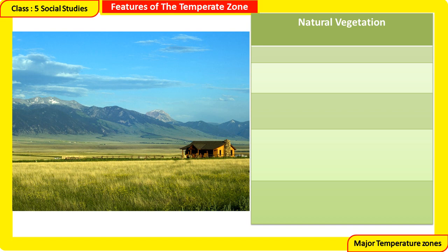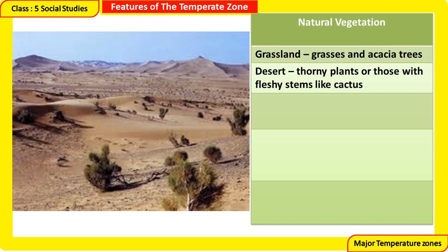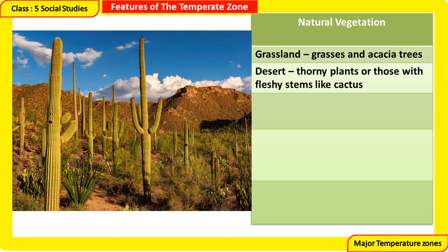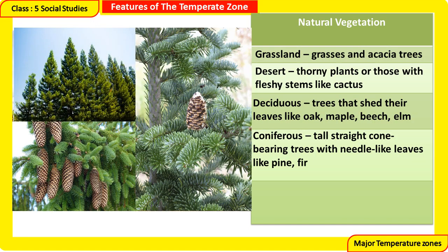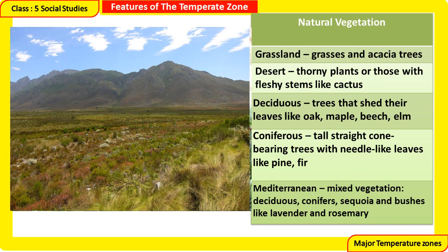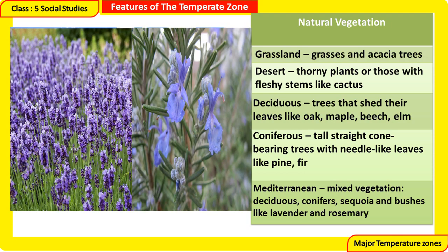Natural Vegetation of the Temperate Zone: Grassland — grasses and acacia trees. Desert — thorny plants or those with fleshy stems like cactus. Deciduous — trees that shed their leaves, like oak, maple, beech, and elm. Coniferous — tall, straight, cone-bearing trees with needle-like leaves, like pine and fir. Mediterranean — mixed vegetation including deciduous trees, conifers, sequoia, and bushes like lavender and rosemary.